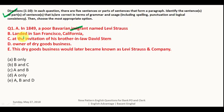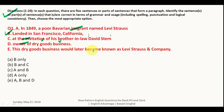Part B — 'landed in San Francisco, California' — is correct. Part C — 'at the invitation of his brother-in-law David Stern' — requires 'David Stern' to be in inverted commas, so this part is wrong. Part D — 'owner of dry goods business' — needs a determiner: 'owner of a dry goods business,' so this is wrong. Part E — 'this dry goods business would later became' — 'would' is followed by first form of the verb, so this is also wrong. Only part B is correct, so your answer is B only.